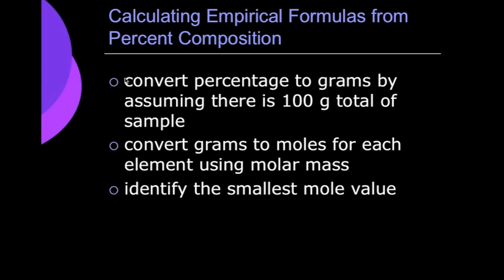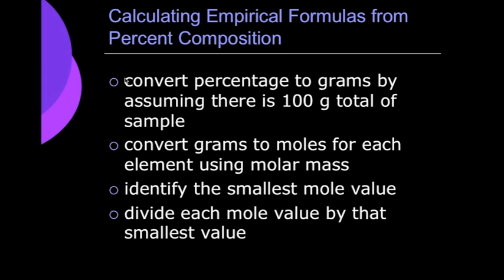Then, after we convert it from grams to moles, we identify the smallest mole value, basically the smallest number that we're left with, and we divide each mole value by that smallest value to give us our ratio, to give us our empirical formula.